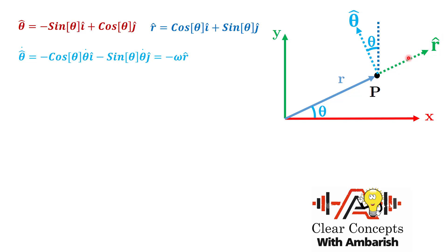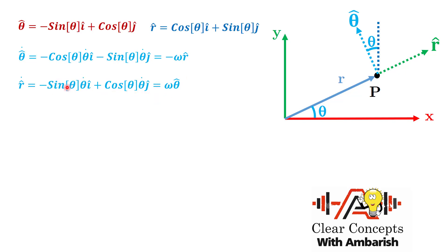Now let's find the derivative of r cap with respect to time. Differentiating r cap: we get minus sin theta times theta dot i cap plus cos theta times theta dot j cap. Taking omega outside, the rest is minus sin theta i cap plus cos theta j cap, which is exactly theta cap. So r cap dot = omega times theta cap. We've differentiated the unit vectors and this will be handy in our derivation.